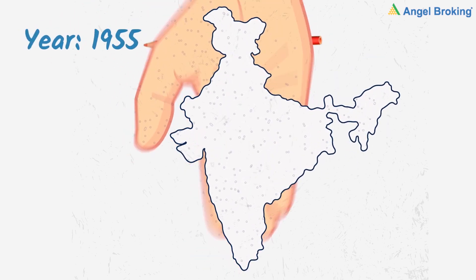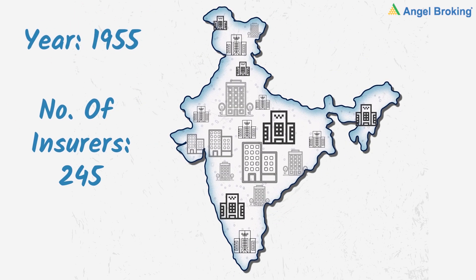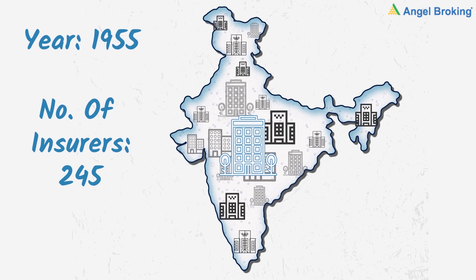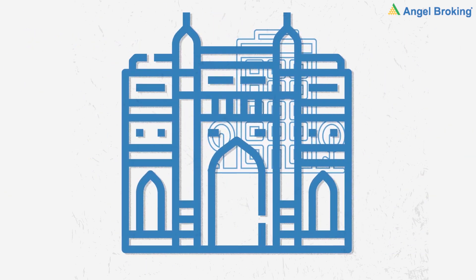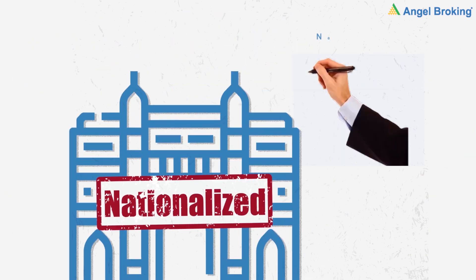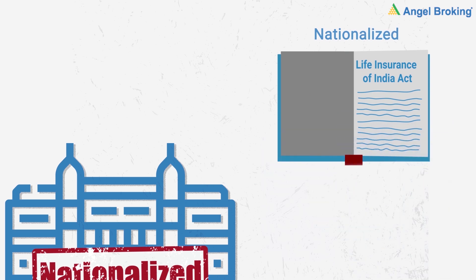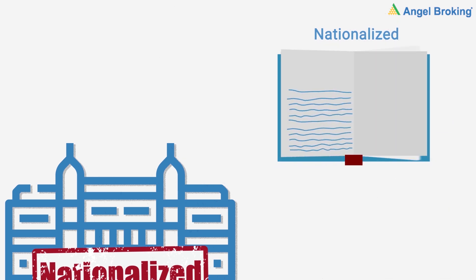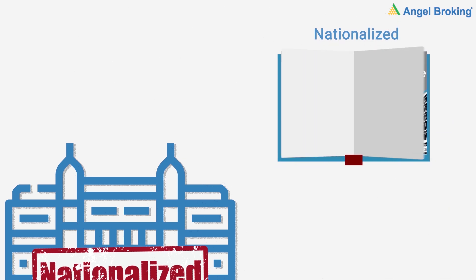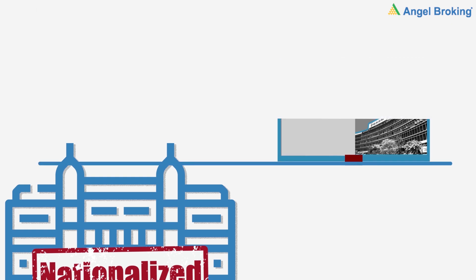Dosto, 1905 mein India mein 245 private life insurance companies thi. Ek saal baad, government ne life insurance industry ko nationalize kar diya. Parliament ne 19 June 1956 ko Life Insurance of India Act passed kiya, and this led to the creation of Life Insurance Corporation of India, in other words, LIC.